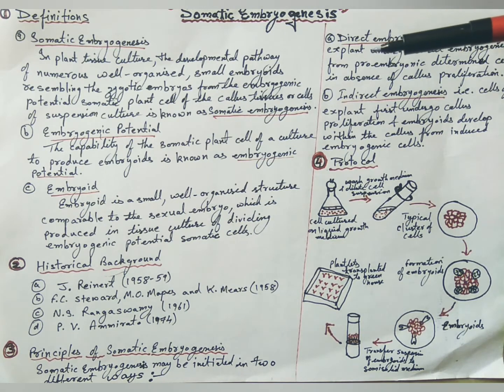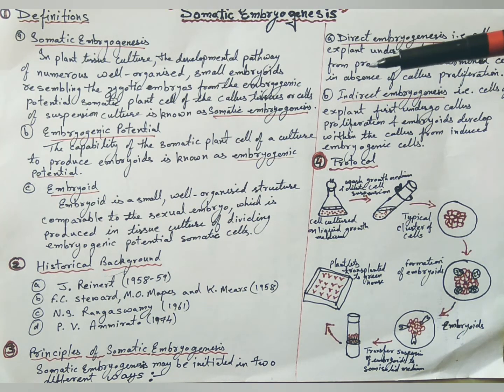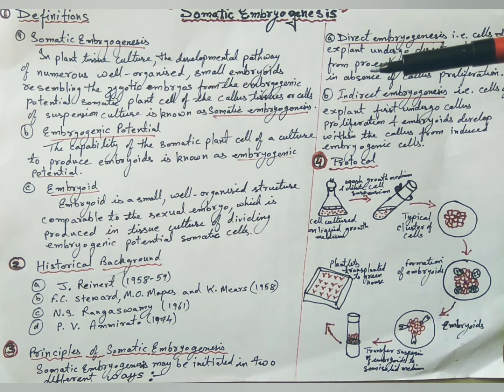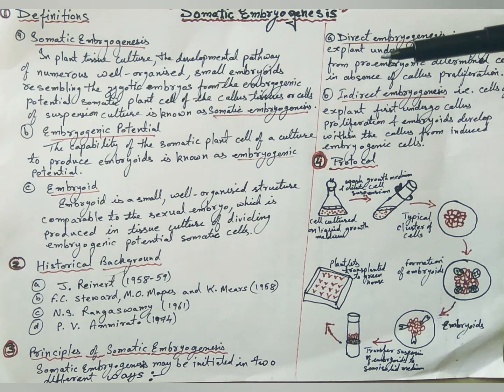During fertilization, the male gamete fuses with the egg cell or female gamete, resulting in the formation of a unicellular zygote or oospore.